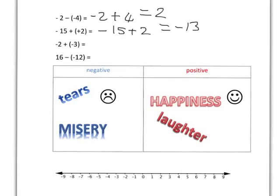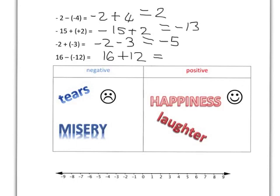I want you to try the next 2 and we'll go over them together — pause the video now. Let's check what we did. We first needed to get rid of the brackets. If we are adding on a negative — adding misery to your life — that is taking away from your life. So we get negative 2 and we take 3 steps down, ending up at negative 5. And the next one: we're taking away the negative — taking away the misery, tears, and unhappiness — so that's going to be 16 plus 12, which is 28.